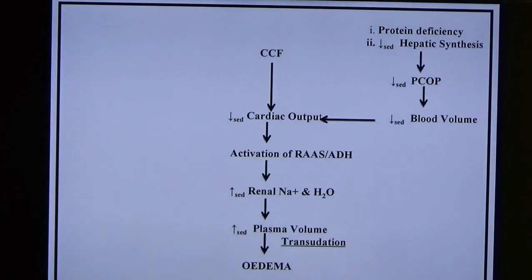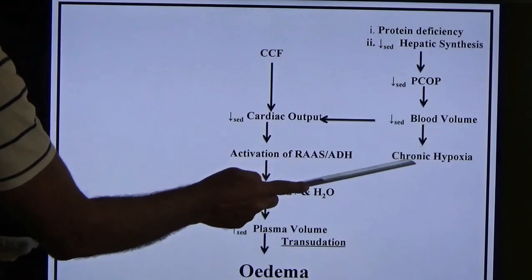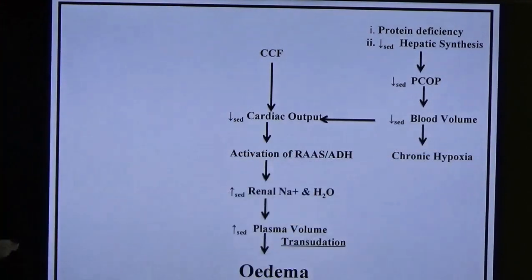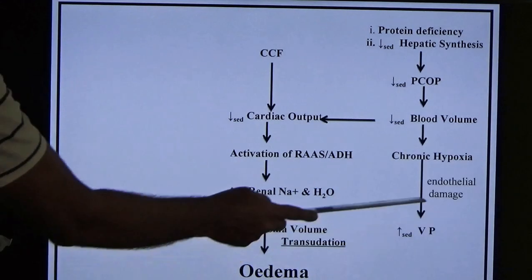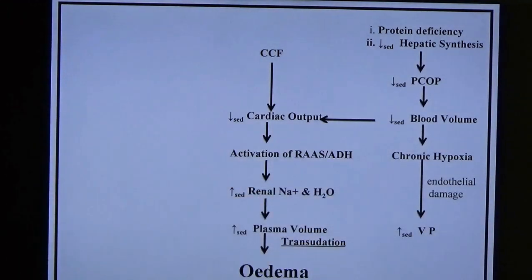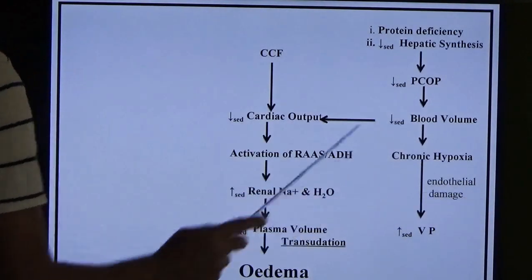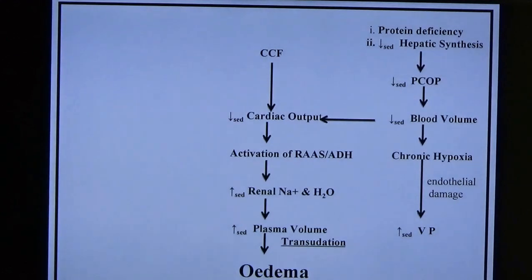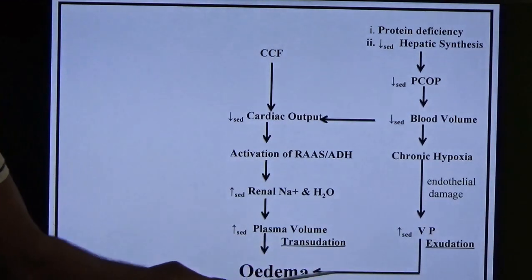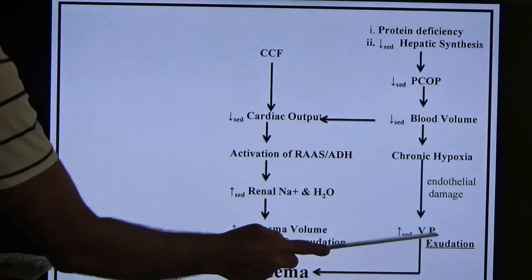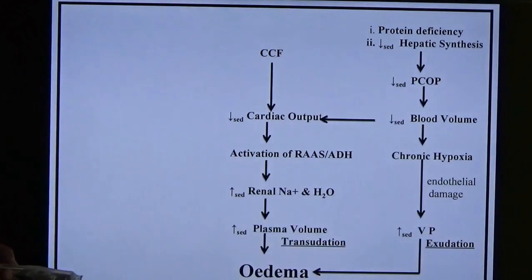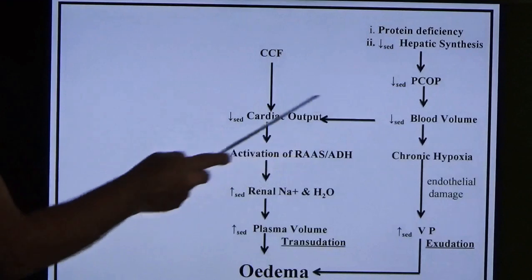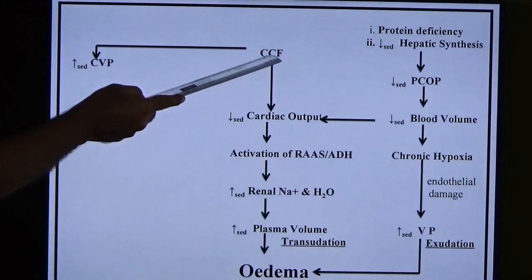Another mechanism: decreased blood volume leads to chronic hypoxia (less oxygen in blood vessels), causing endothelial damage (endothelium is the lining of blood vessels). Endothelial damage leads to increased vascular permeability, which leads to edema — this type of fluid is known as exudate. A third mechanism: congestive cardiac failure leads to increased central venous pressure.